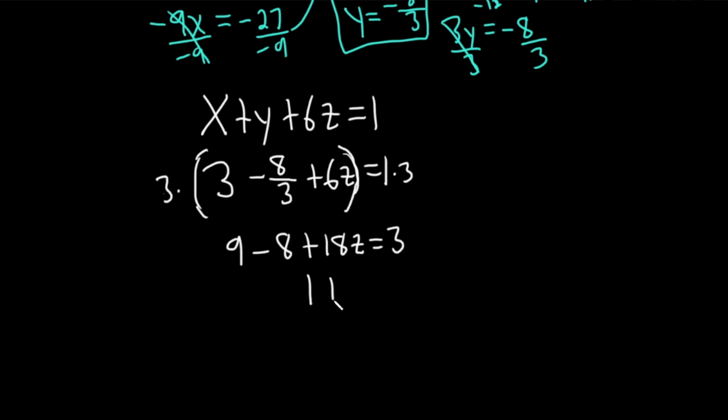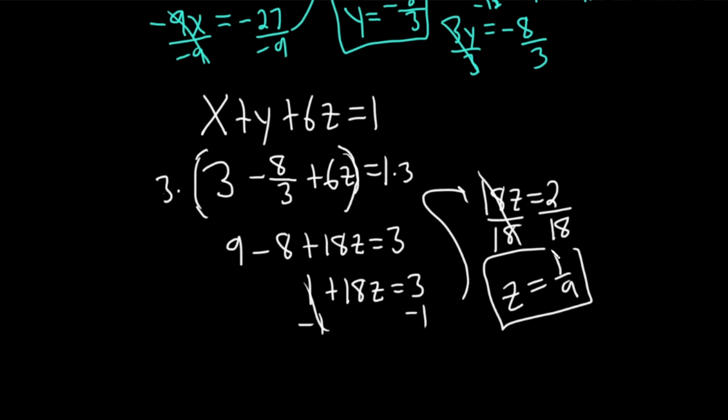9 minus 8 is 1. That's much easier math. And we have 18z equals 3, so 1 plus 18z equals 3. Subtract 1, so we have 18z equal to 2 because 3 minus 1 is 2. Divide by 18. We did it. z is equal to 1 over 9. So good. These problems take so long, they are so much work.